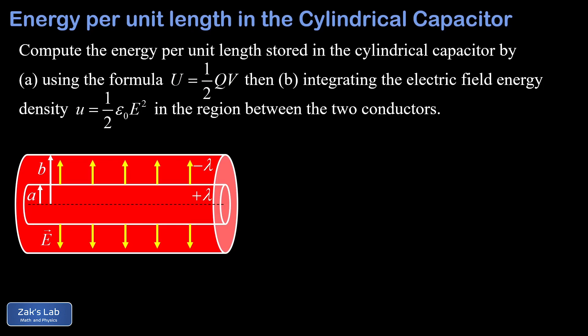In the previous two videos, we've already figured out most of what's going on in this thing. First, we computed the electric field by using Gauss's law. That turned out to be lambda over 2 pi epsilon 0 r, and I'll post a link to that derivation at the top. In the second video, we computed the potential difference between the two cylinders, and that was lambda over 2 pi epsilon 0 natural log of b over a. Then we used that potential difference to find the capacitance per unit length, which turned out to be 2 pi epsilon 0 over natural log b over a.